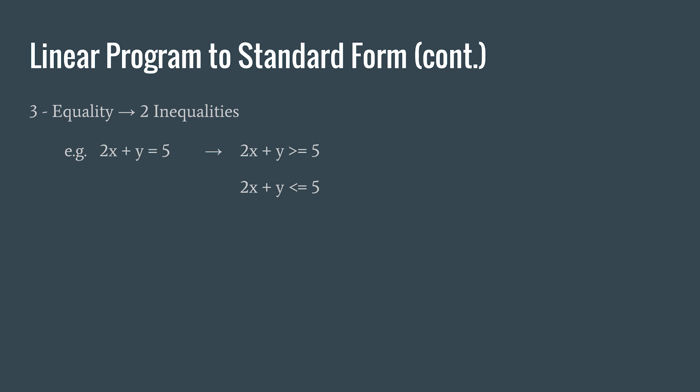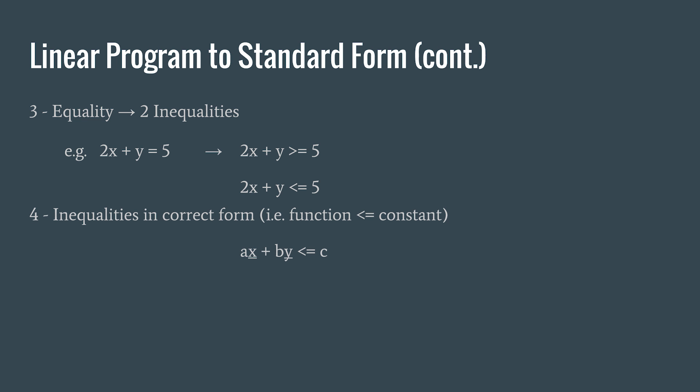Number three: if we have an equality, we need to replace it with two inequalities, as shown in the example here. Number four: all the inequalities must be in the correct form — that is, the function must be less than or equal to the constant, with all variables on one side and the constant on the other side.